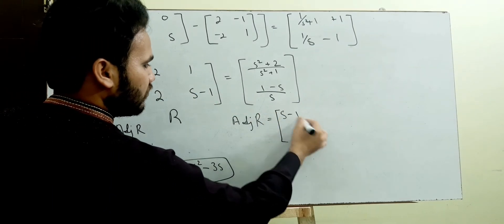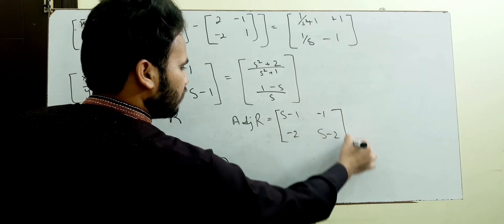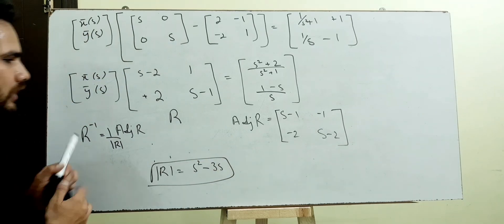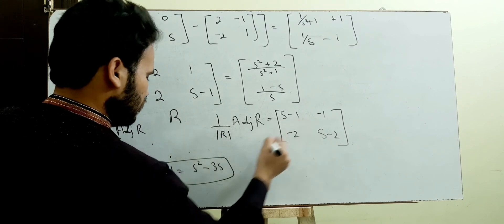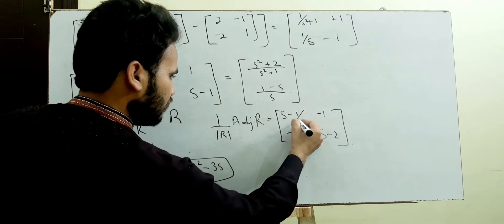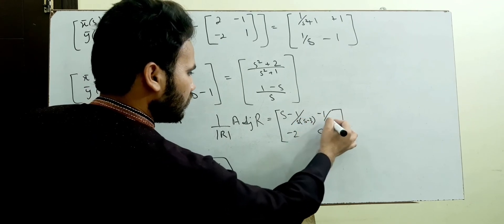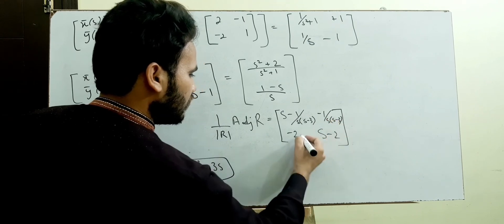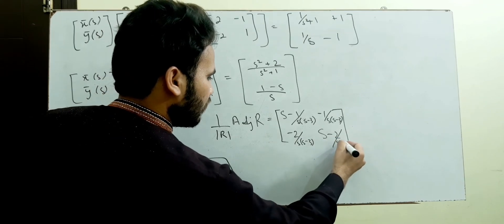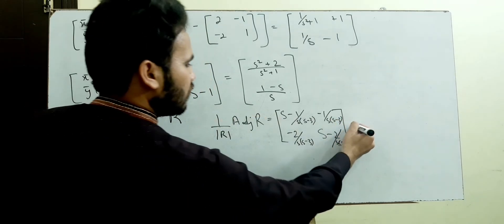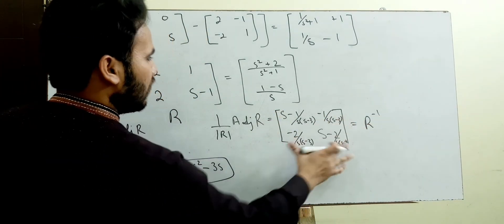Change the diagonal entries and change the sign of the rest of the entries. Multiplying by 1 over the determinant s²-3s gives us R inverse. This is our R inverse matrix, which we multiply on both sides.